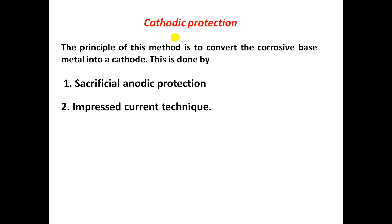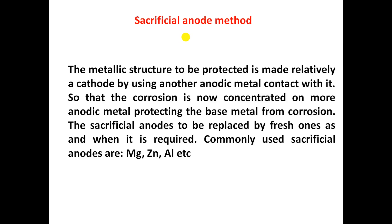Cathodic protection is done by two methods: the sacrificial anodic method and the impressed current method. In the sacrificial anodic method, the metal structure to be protected is made relatively cathodic by using a more anodic metal in contact with it, so that the corrosion is now concentrated on the more anodic metal, protecting the base metal from corrosion.